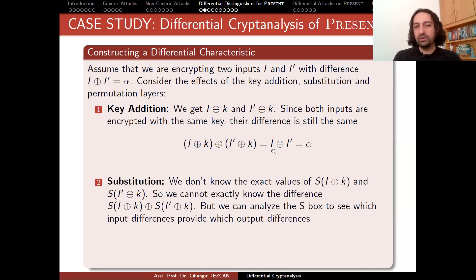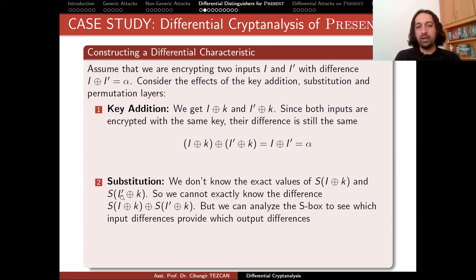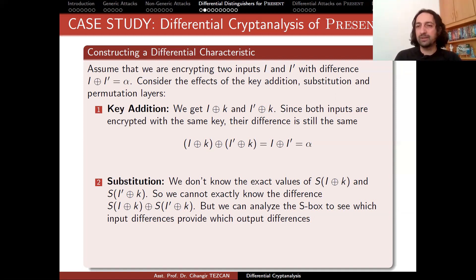The tricky part is the substitution layer. We don't know the exact values of S(i XOR k) because we don't know the input, even though we know the S-box. We also don't know S(i' XOR k). So we cannot exactly determine the output difference after the S-box. However, we can analyze the S-box to see which input differences produce which output differences — this leads us to difference distribution tables, where the probabilities come into play.